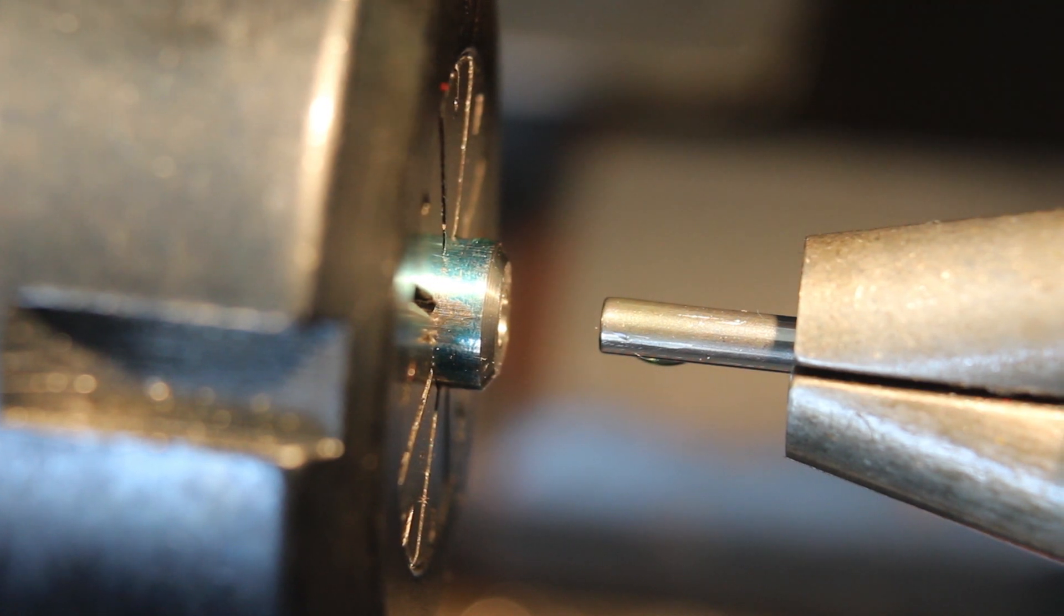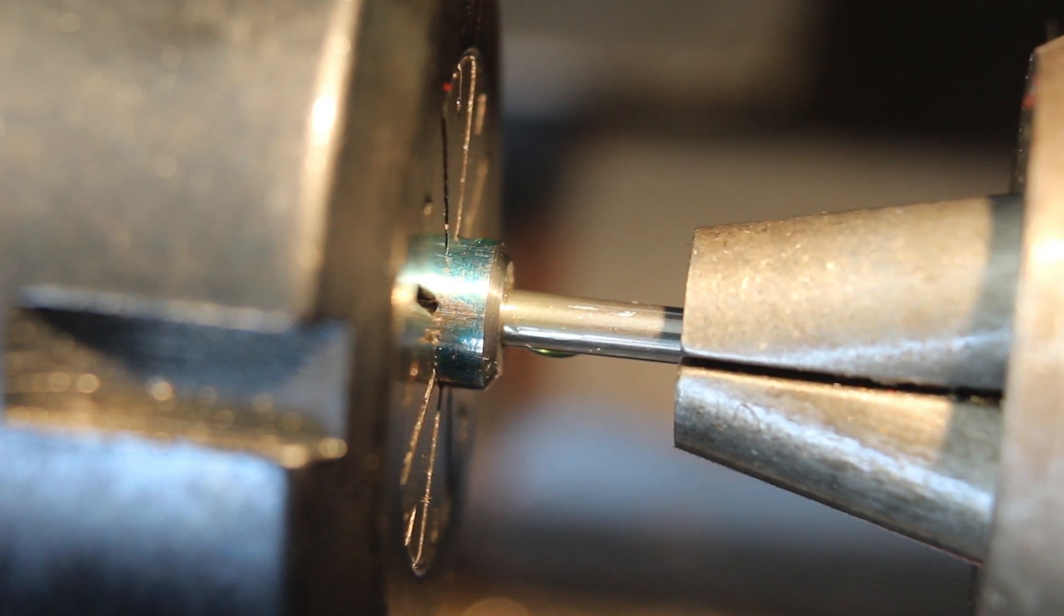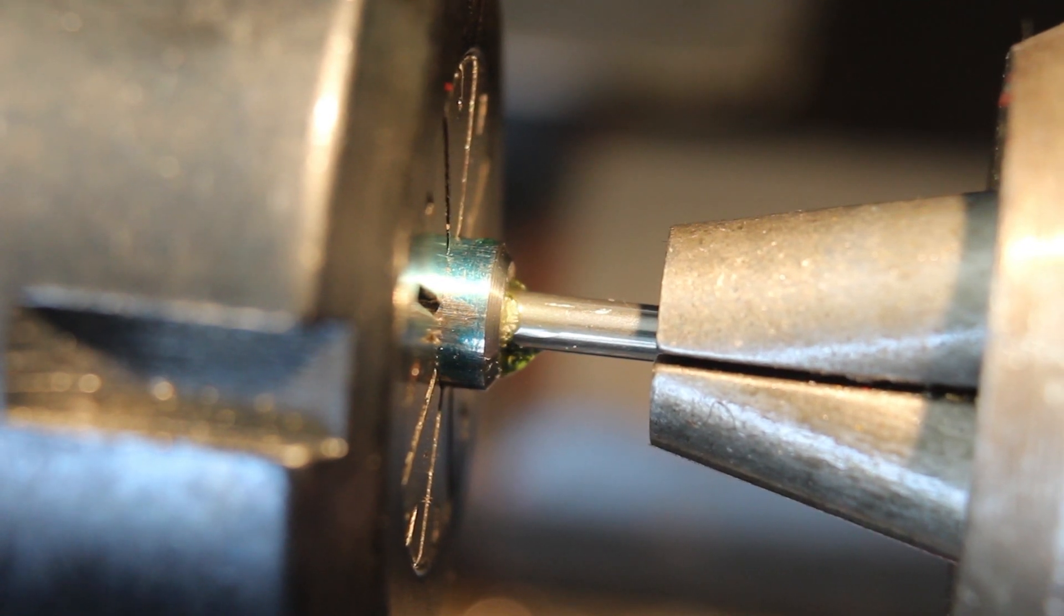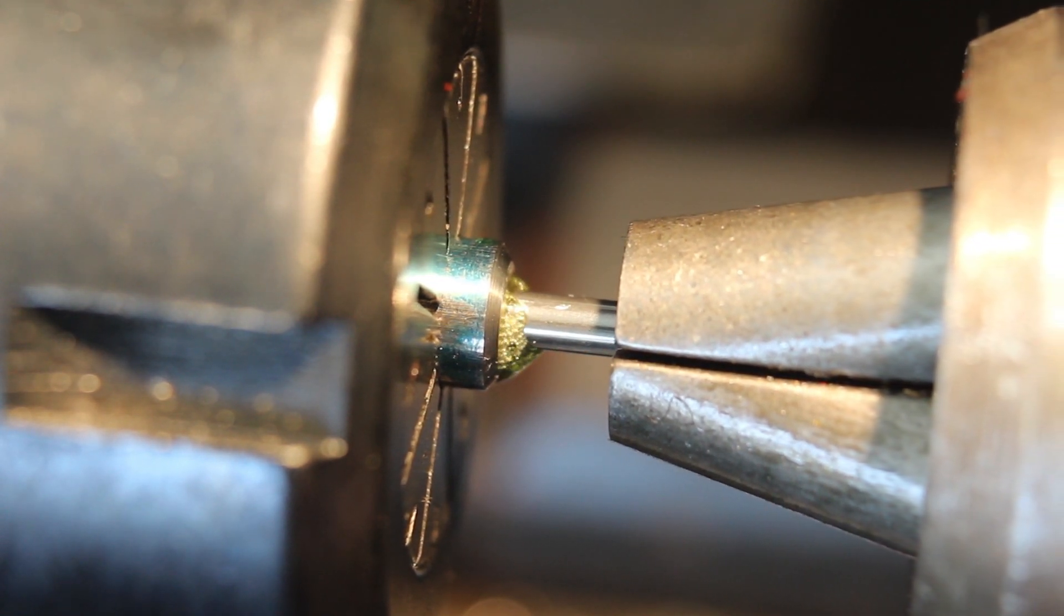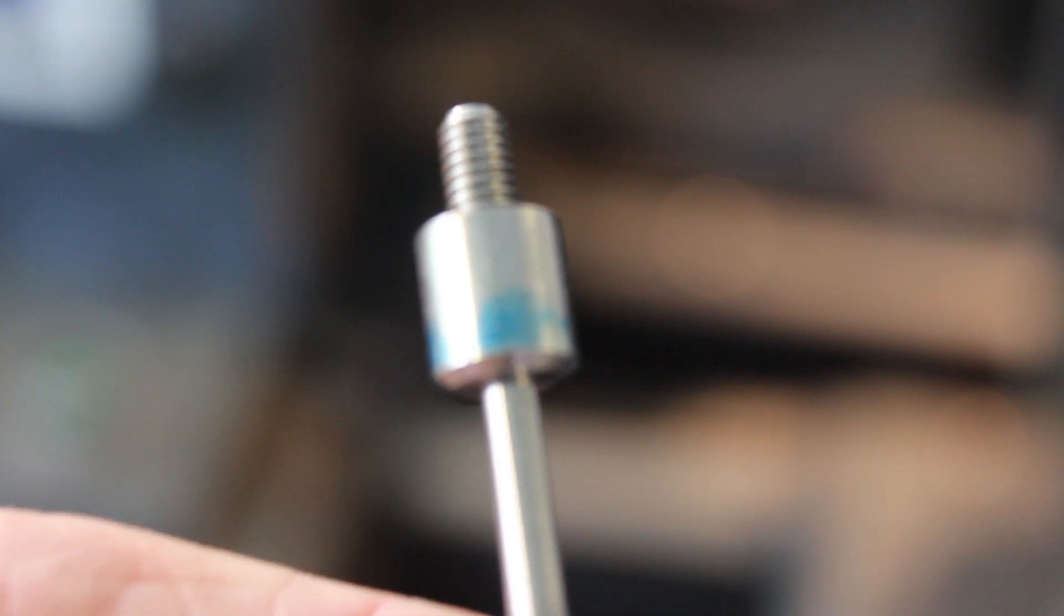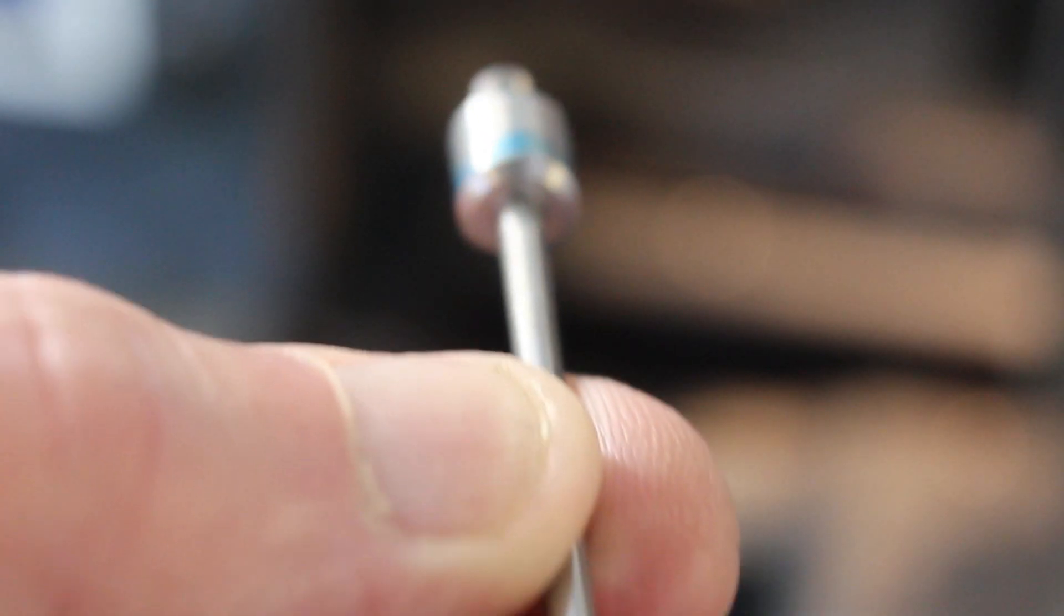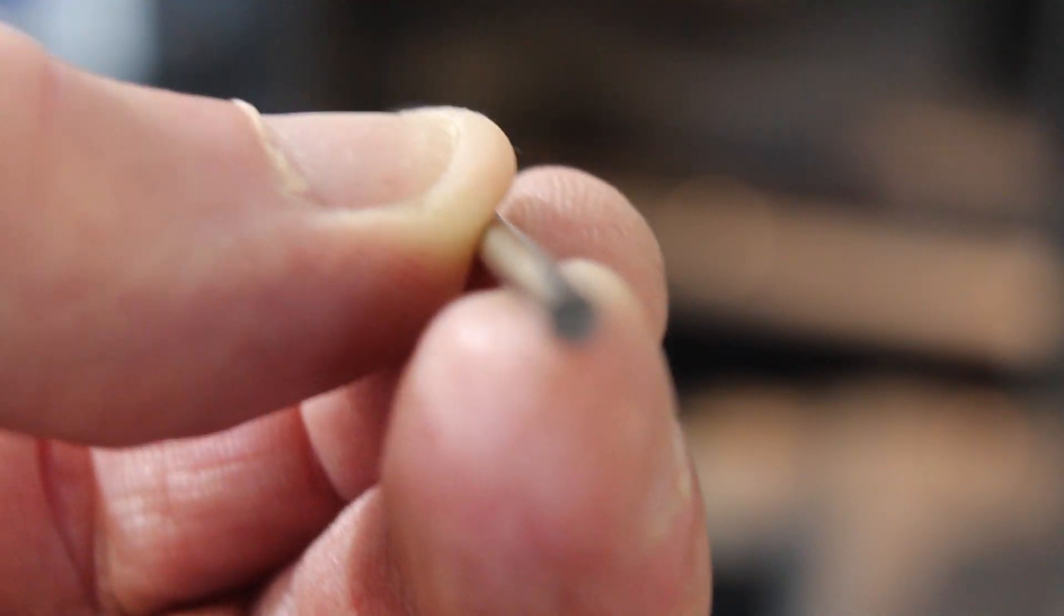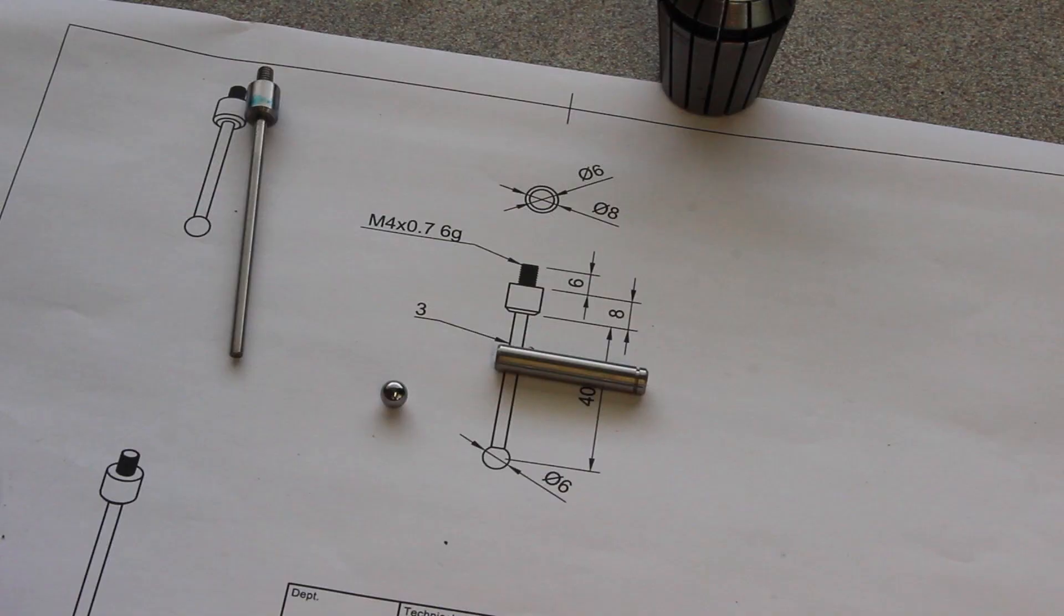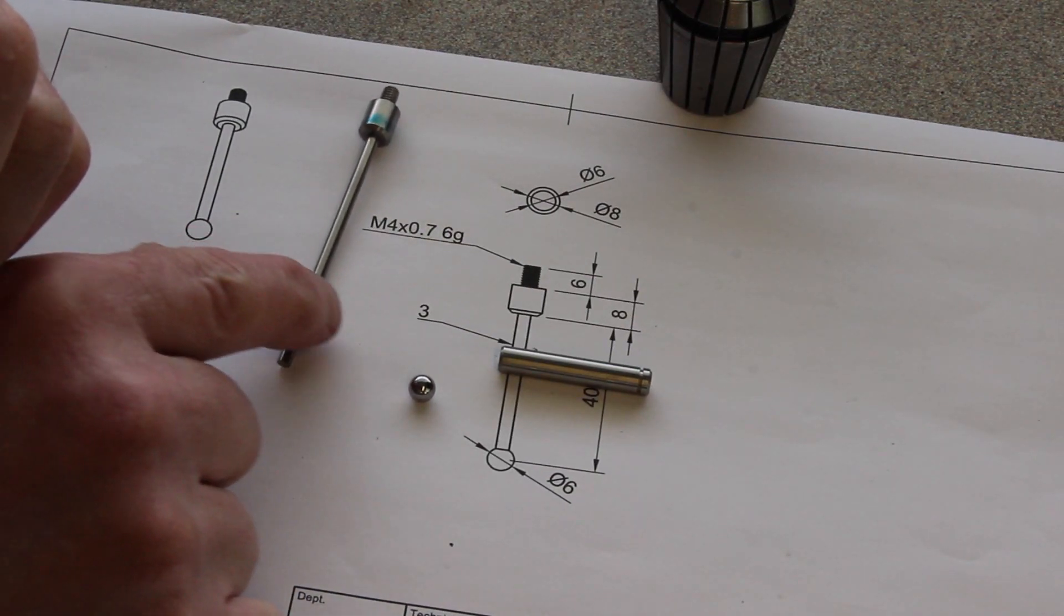There we go, just use the tailstock to push it in. Progress so far - just need to cut it to length and fit a ball at this end.